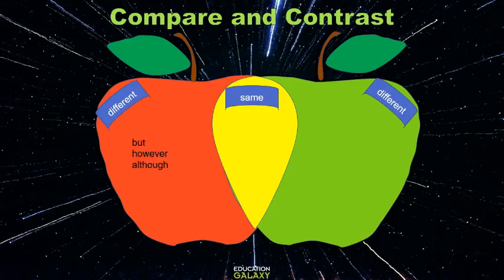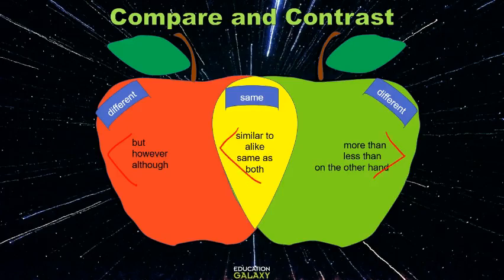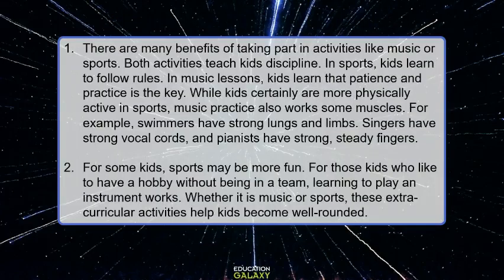The keywords used to show differences are, for example, but, however, although, more than, less than, on the other hand. The words used to show similarity may be similar to, alike, same as, both. Let's look at this example that compares music and sports.